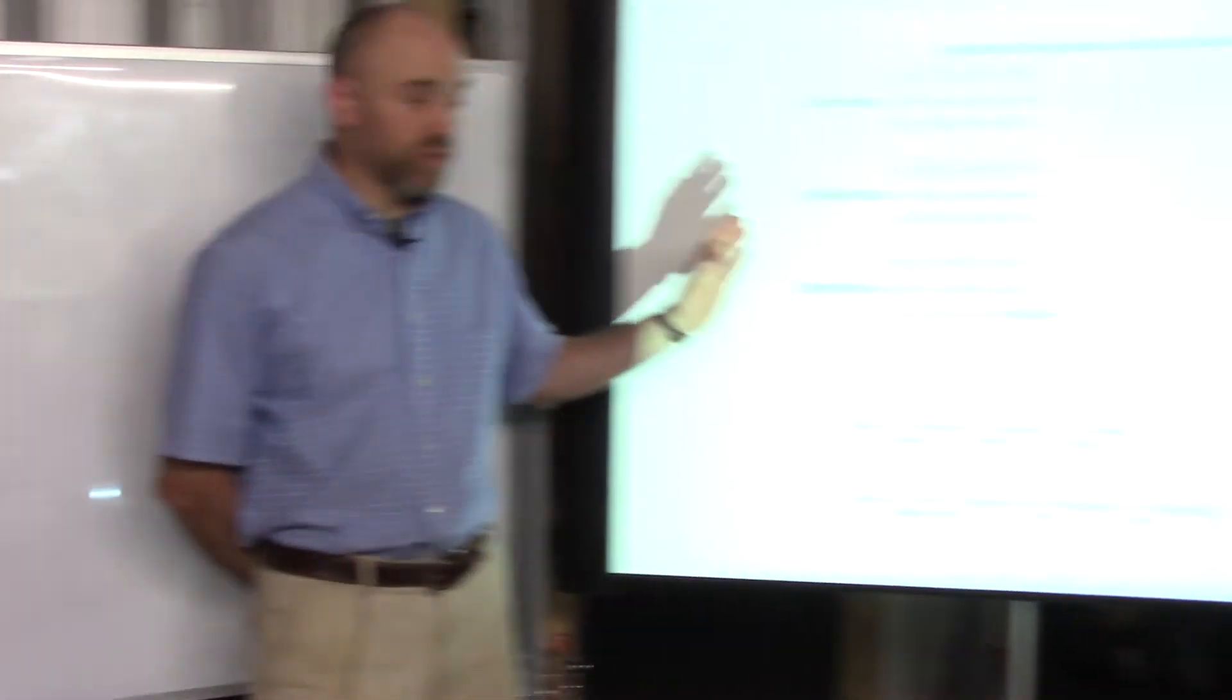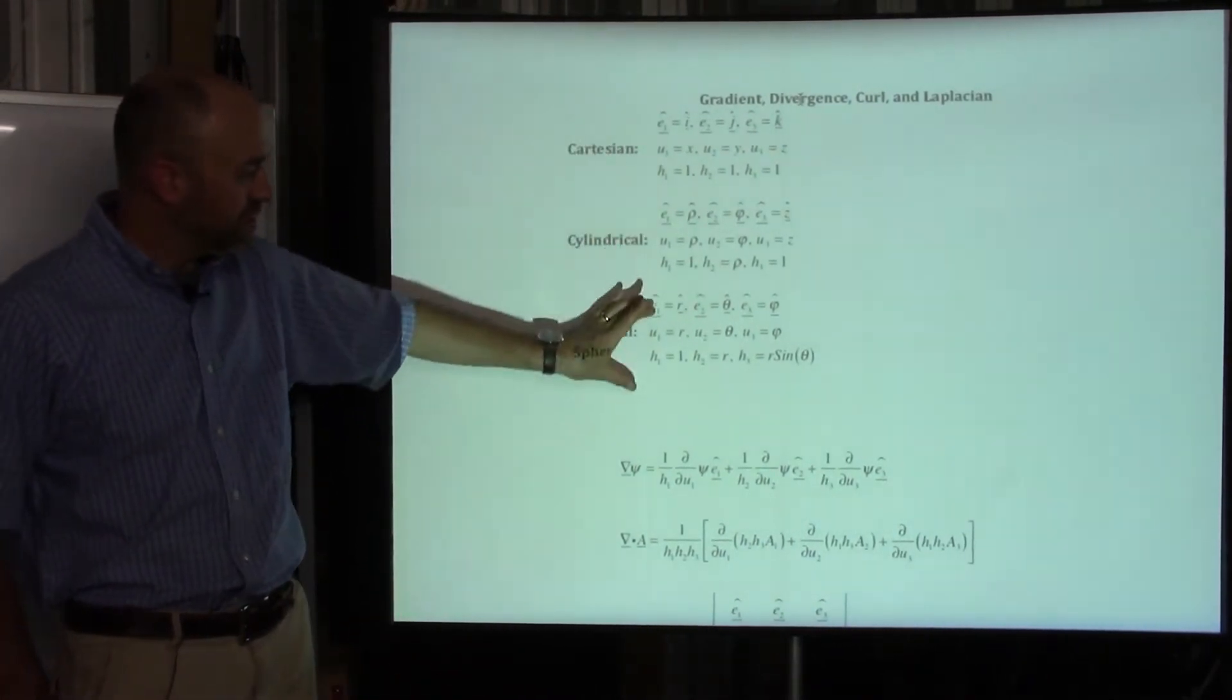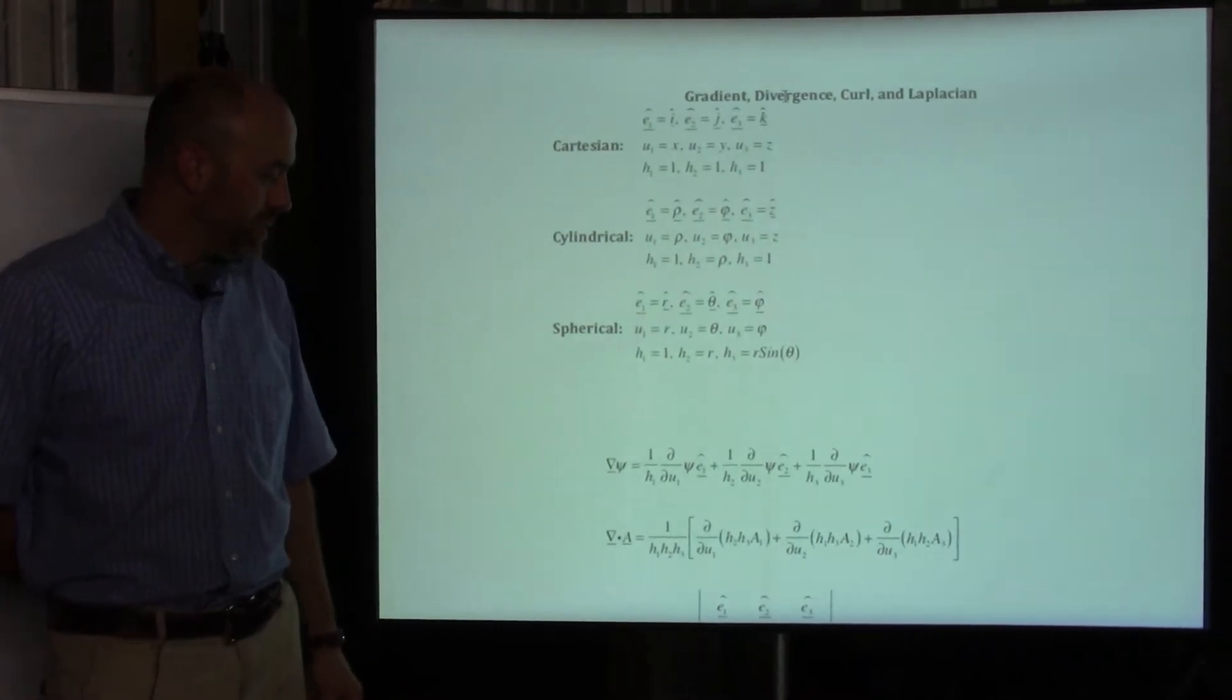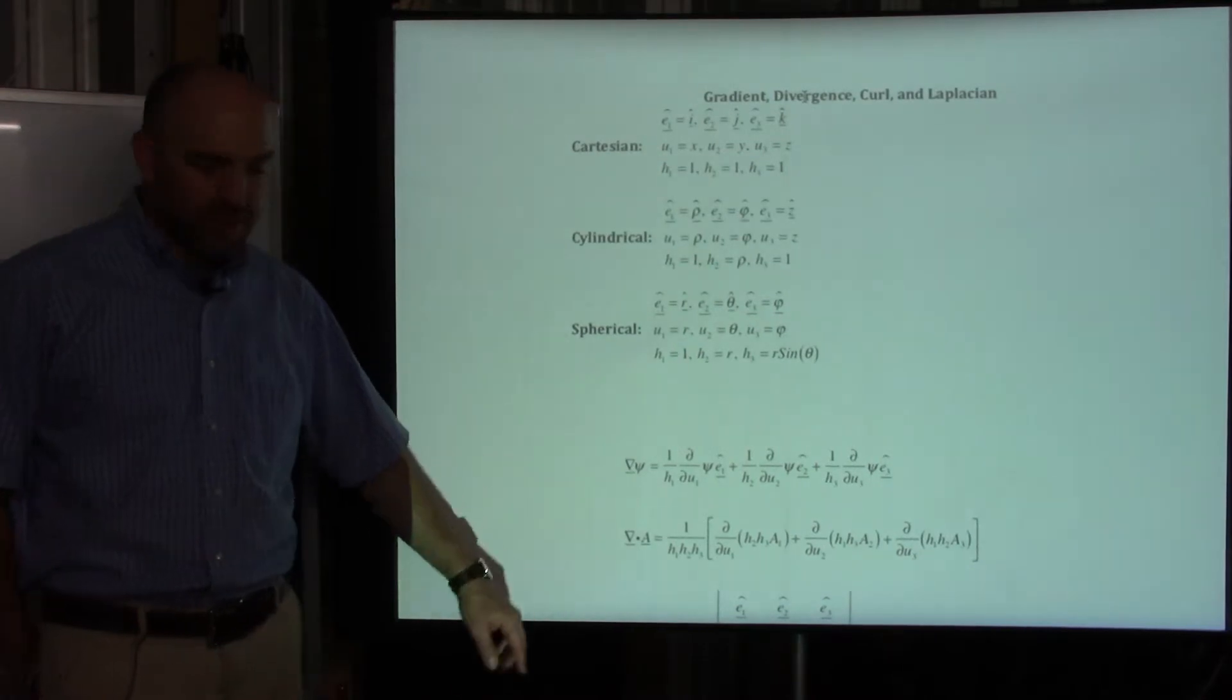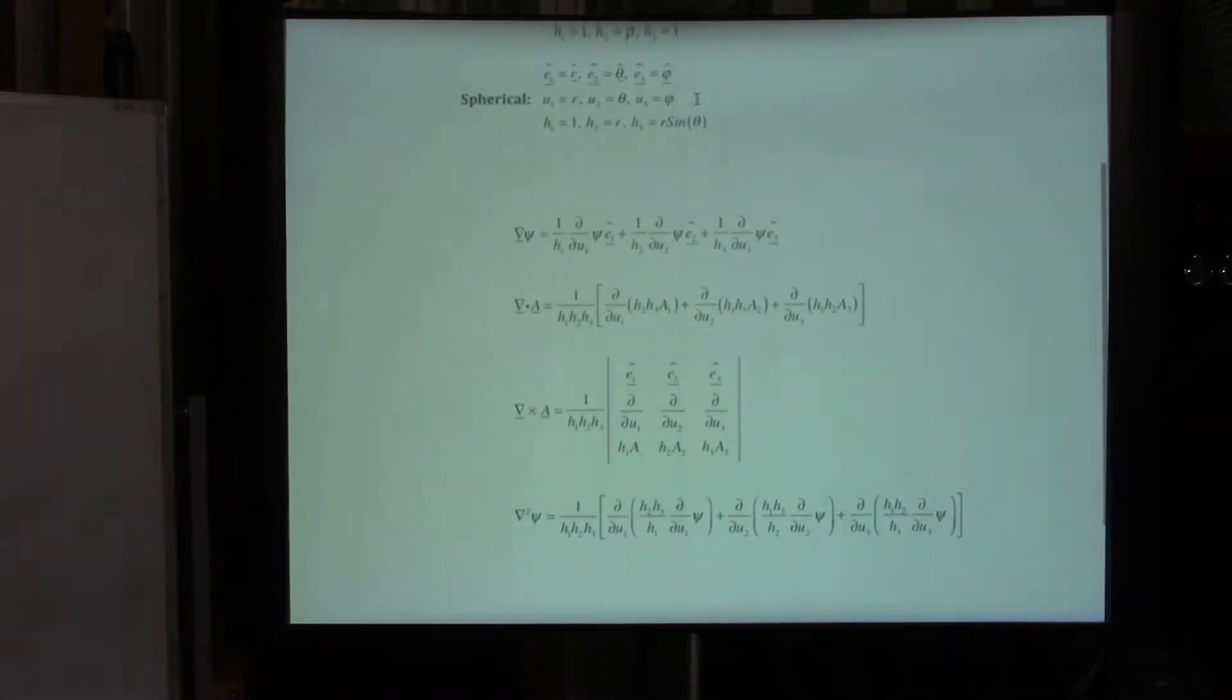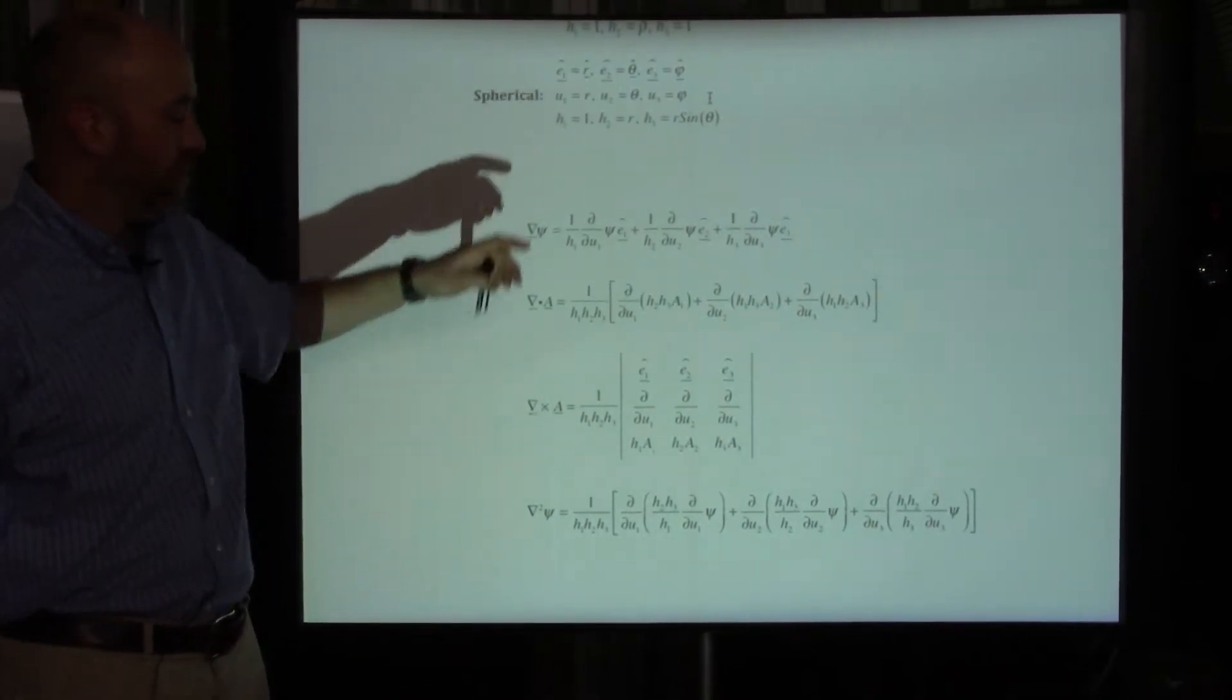Okay, so look over here, this is page 3 of your coordinate systems sheet. And just to note, to start with, you have to notice that there's all these different things. This stuff here goes with the Cartesian, this stuff here goes with cylindrical, and this stuff here goes with spherical. And let's look down here at curl of a vector and let's do it in spherical coordinates.